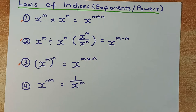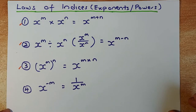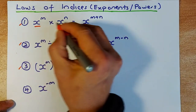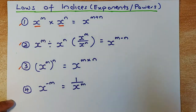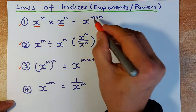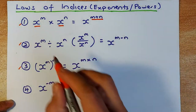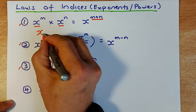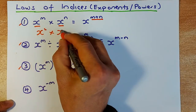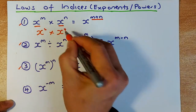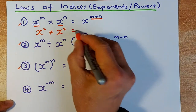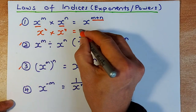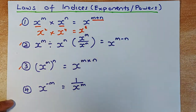Law 1: if you have x to the power m with the same base x, and you multiply, you are adding the powers. So for example, x squared times x to the 4th, you add the powers: 2 plus 4 gives you x to the power of 6.